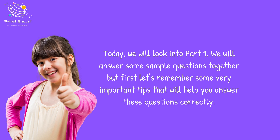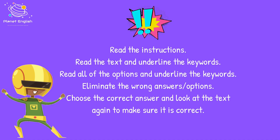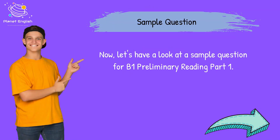The first thing we need to do is to read the instructions. Then read the text and underline the keywords. Read all of the options and underline the keywords. Eliminate the wrong answers. And finally, choose the correct answer and look at the text again to make sure it is correct.